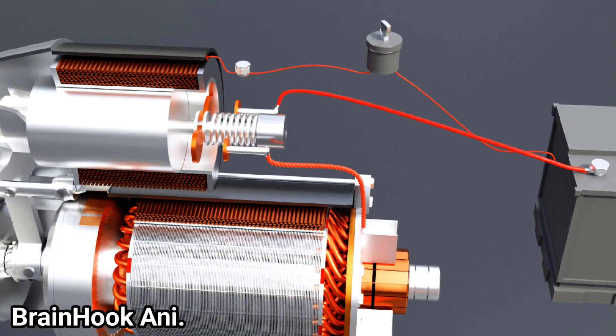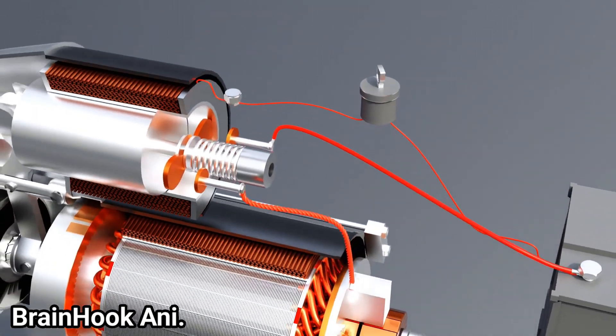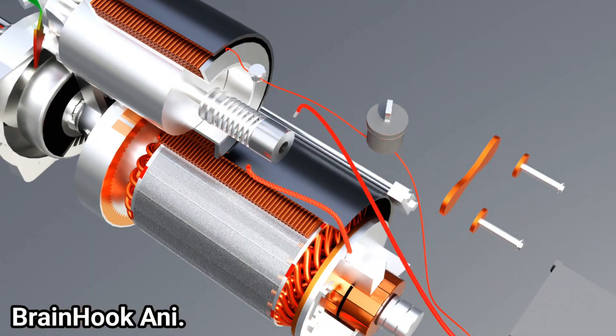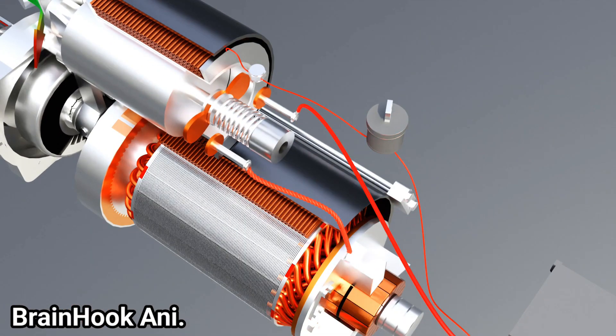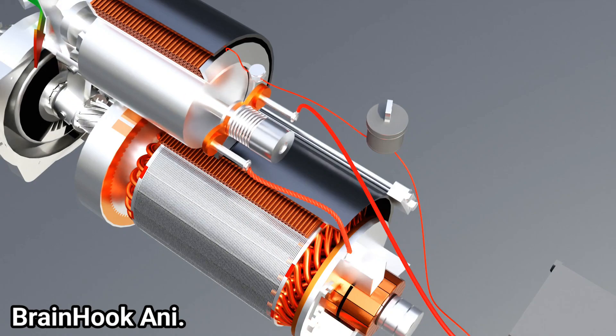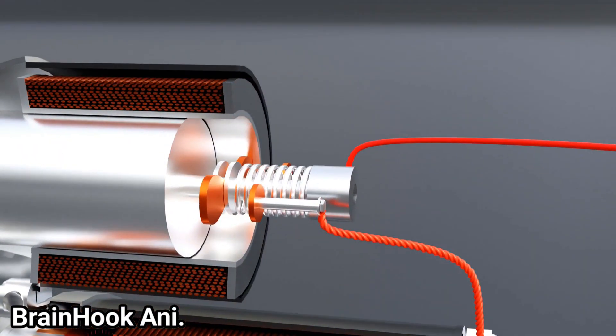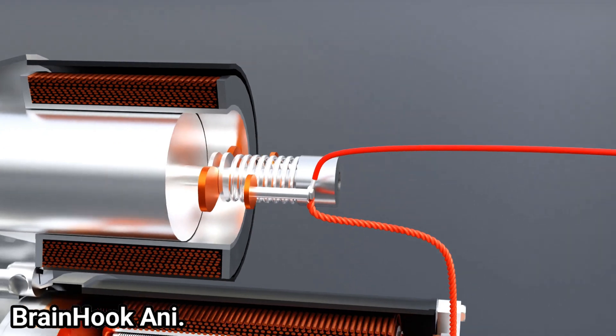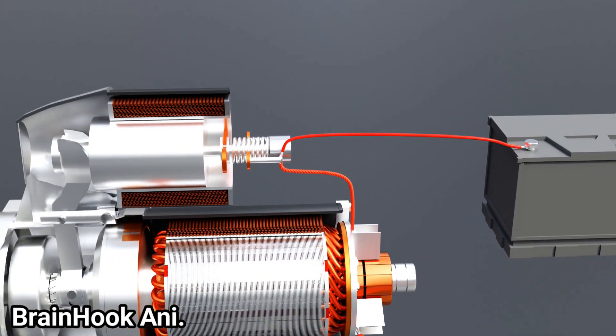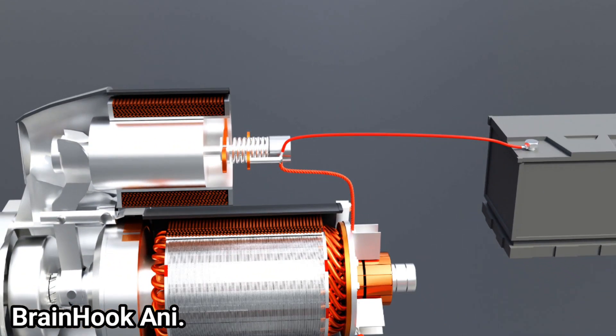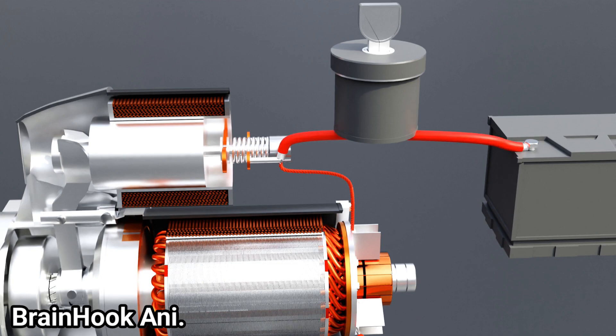We may wonder why solenoid and contactor are used instead of direct connection of motor and battery, as the circuit design is complicated by adding solenoid and contactor. The main reason for not connecting the battery and motor directly through a switch is that the motor is very powerful and requires a lot of electricity. The ignition switch would need to be unusually large to handle this amount of electricity, which is against modern technology and would require very thick wiring from the battery to the switch to the motor.